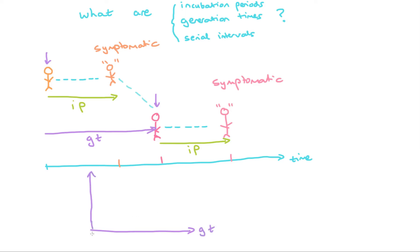Generation times have always got to be greater than zero, unlike the serial interval. We can draw what this plot might look like. It might follow a curve that looks something like this. This is our histogram or our density of our probability distribution.